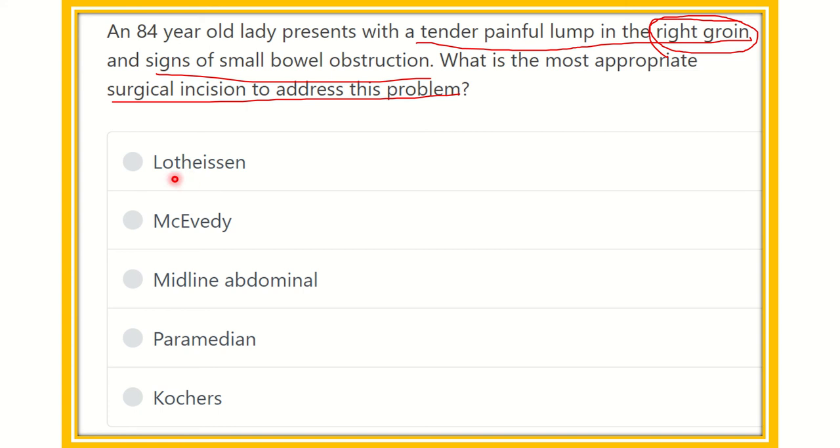The options we can see are Lotheissen, McEvedy, midline abdominal, paramedian, and Kocher's. So we have to find out one of the options which will be suitable for this patient for a painful lump in the right groin.